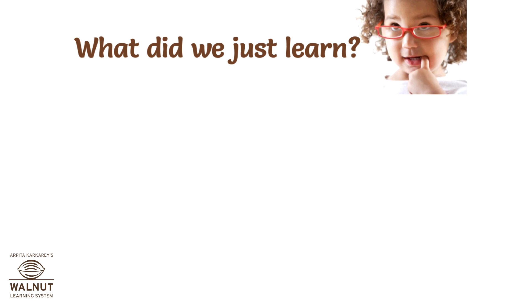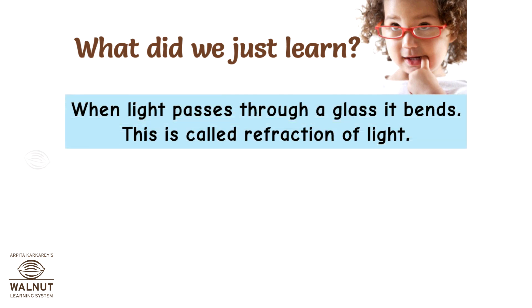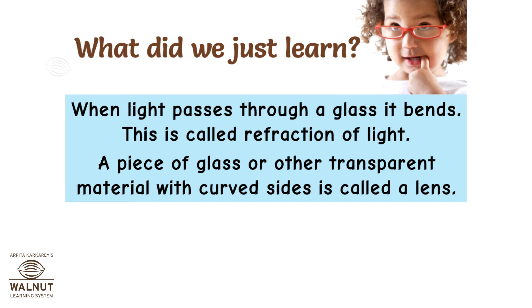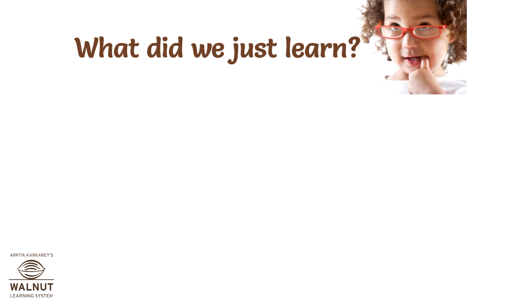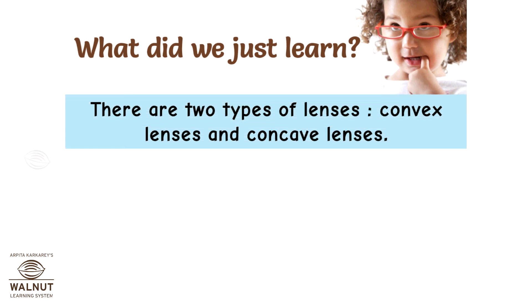What did we just learn? When light passes through a glass, it bends. This is called refraction of light. A piece of glass or other transparent material with curved sides is called a lens. There are two types of lenses: convex lenses and concave lenses.